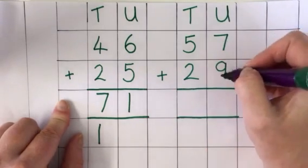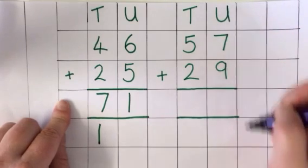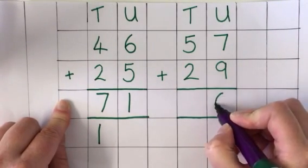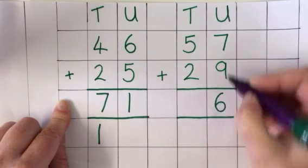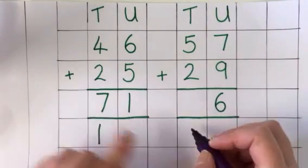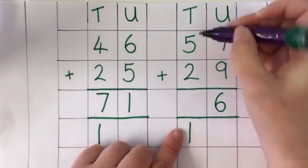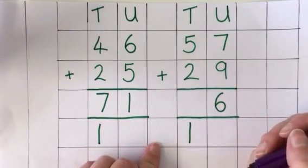I'll start with the units. So 7 units and 9 units makes 16 units. I can put the 6 in because I'm finished adding all of the units up now. But the 10 that makes that 16 needs to go here until I've added up the rest of the tens.